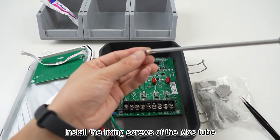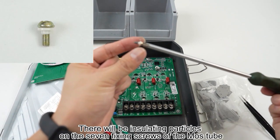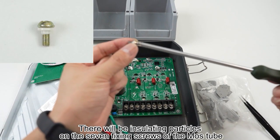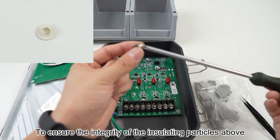Install the fixing screws of the MOS tube. There will be insulating particles on the seven fixing screws of the MOS tube. Ensure the integrity of the insulating particles above.